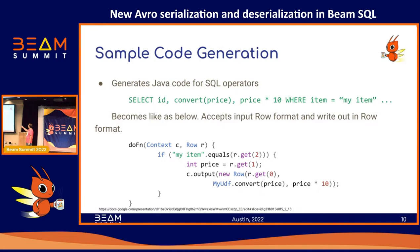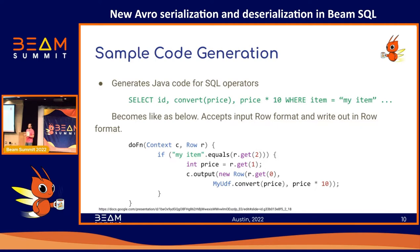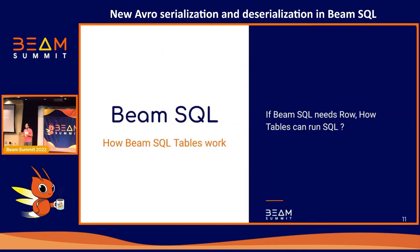Here is a sample SQL — select id, convert price, multiply price by 10, then filter by item. It generates this Java code behind the scenes. But to generate the Java code it needs to know the data types. It doesn't know whether you use Avro, JSON, Parquet, or Proto. That's why Beam developers created the Row format — a unified format — and no matter which format you're using, everything is converted to Row behind the scenes.